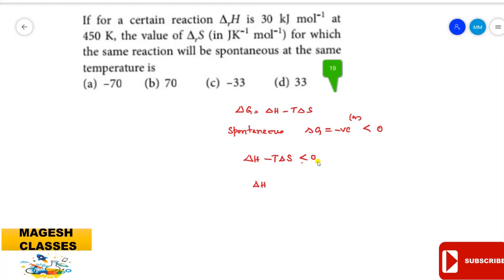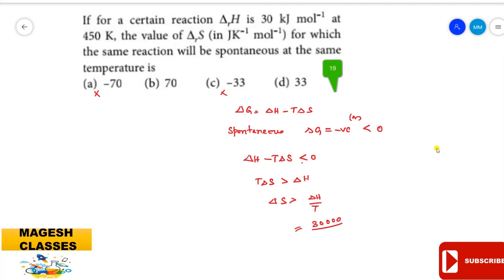Substituting into the equation: ΔH − TΔS < 0, which means TΔS > ΔH. Therefore ΔS must be a positive quantity and greater than ΔH/T. So options A and C may not be the answer. Here ΔH = 30,000 J, divided by 450 K gives approximately 66.7, so the answer is B.